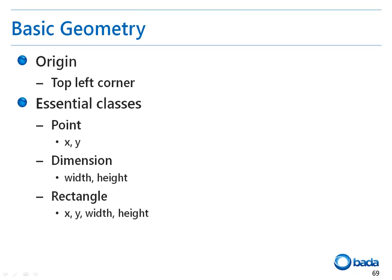Now let's look at the geometry of Bada graphics. In Bada, the origin of the coordinates is the top left corner of the screen. A few classes that support geometry functions are pre-defined. The first is the Point class, which represents the position of a point and contains x and y coordinates. The Dimension class represents the size and contains width and height. A Rectangle is the combination of the Point and Dimension classes, containing x, y, width, and height.